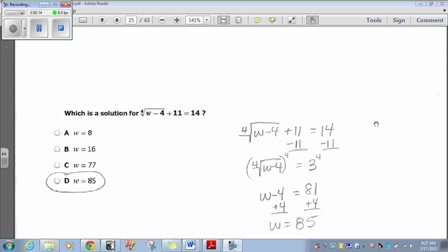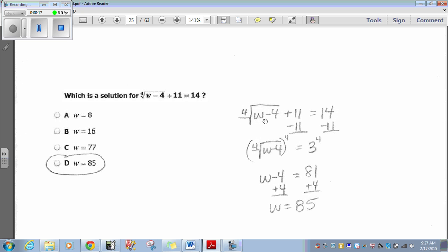Well, we can do this by hand rather simply. Fourth root of w minus 4 plus 11 is 14. We subtract 11 on both sides. We'll get the fourth root of w minus 4 equals 3. Since this is a fourth root, we want to get rid of the radical. I will raise both sides to the fourth power.